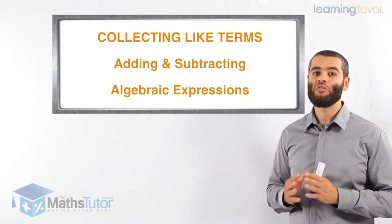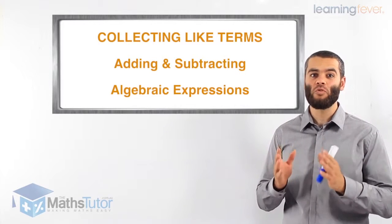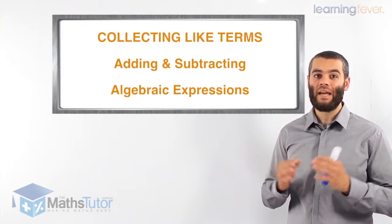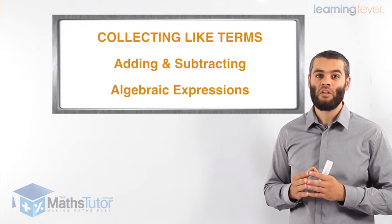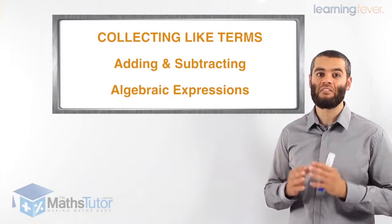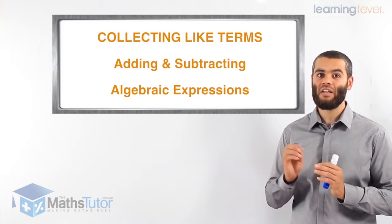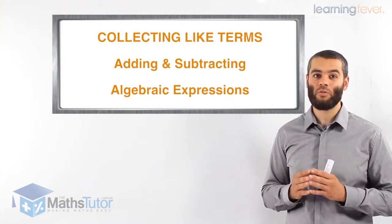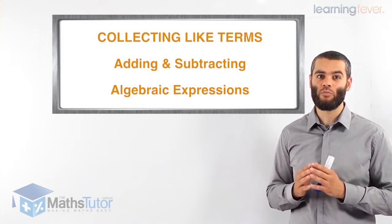In a previous lesson, we introduced algebra and we said that in algebra, we follow the same rules as normal number sentences. We can add, subtract, multiply, and divide algebra. So they behave exactly the same as normal numbers. We have pronumerals which we know as letters or symbols. Today I'm going to show you how to add and subtract algebraic expressions, meaning number sentences that have pronumerals.